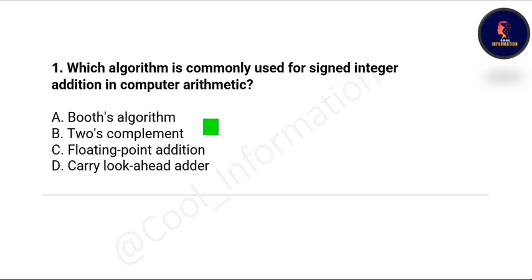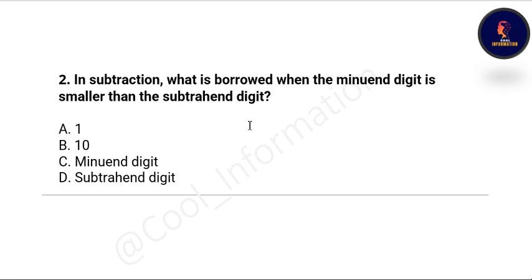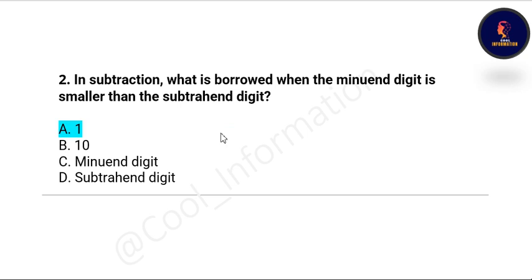The first question is: which algorithm is commonly used for signed integer addition in computer arithmetic? Options are: both algorithm, two's complement, floating point addition, and carry look-ahead adder. The correct option is two's complement. Next question: in subtraction, what is borrowed when the minuend digit is smaller than the subtrahend digit? Options are: one, ten, minuend digit, subtrahend digit. Correct option is option A, which is one.